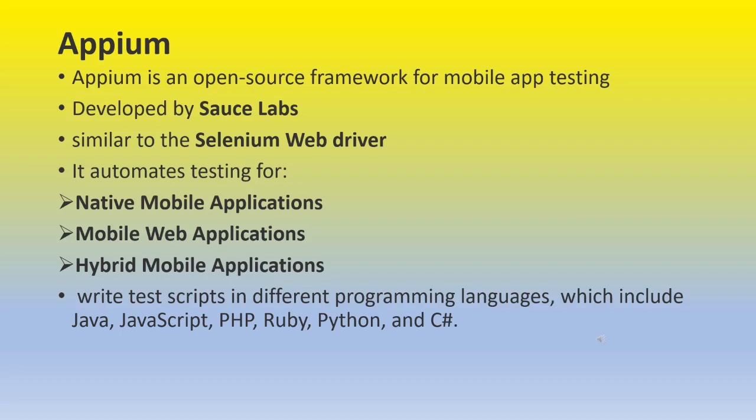The three types are: mobile application, mobile web application, and hybrid mobile applications. These 3 types of applications we have to automate. What do we call native mobile applications? It is specific to a platform — it is not cross-platform. It could be an Android phone or an iPhone — those are called native mobile applications.